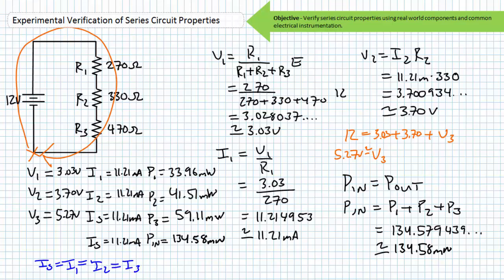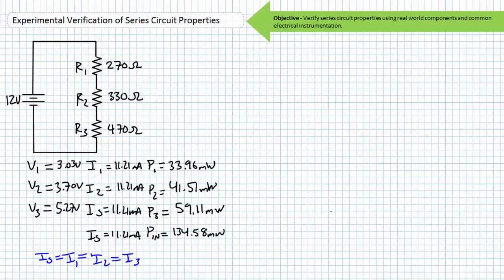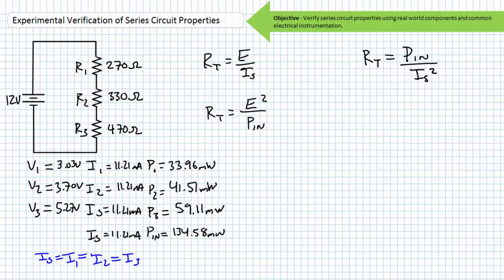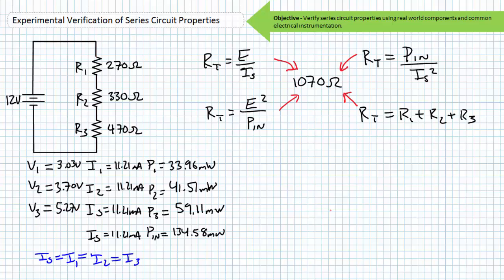Very rarely are you given the complete picture — you are often reliant upon creative interpretation of basic series circuit properties, reasoning ability, and good organized and efficient work practices. One can solve for total resistance using several equally valid interpretations: Ohm's law from the source perspective where RT equals E divided by I_S; power equations where RT equals voltage squared divided by power input, or RT equals power input divided by source current squared; or for the series resistance summation formula RT equals R1 plus R2 plus R3. Either of these four calculations yields a total resistance of 1070 ohms — a great check.